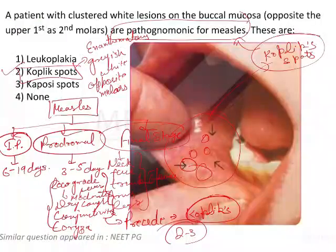Going back to the question, the answer is option 2 — Koplik's spots.